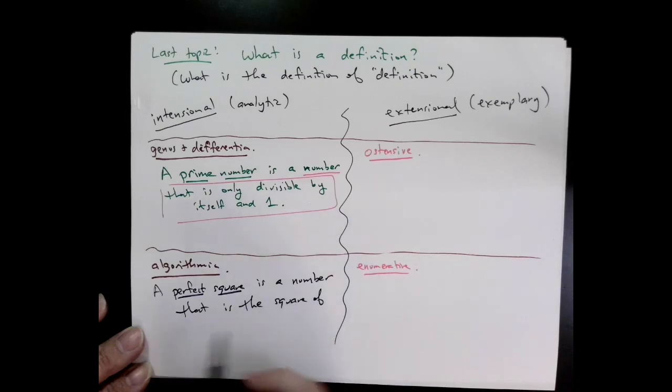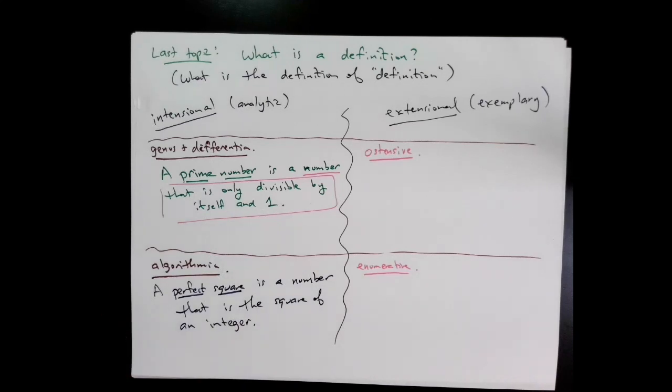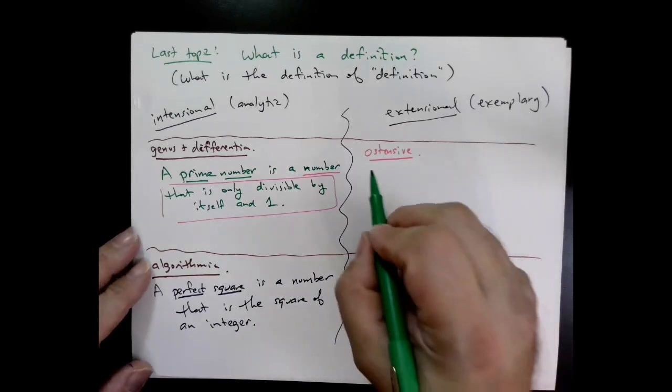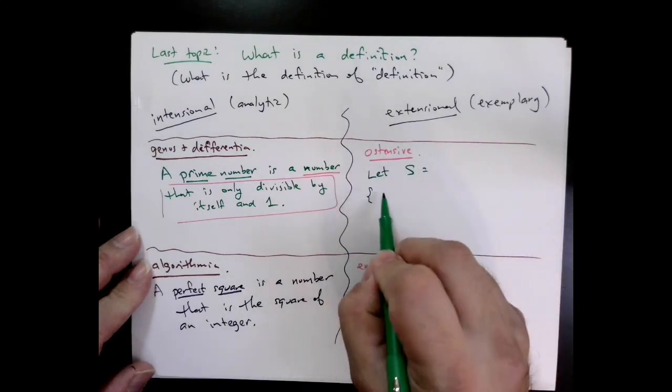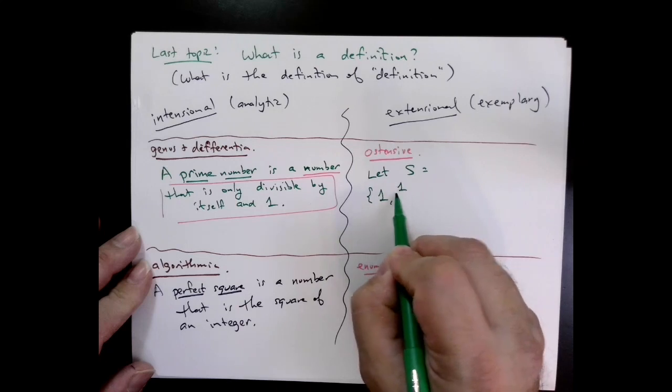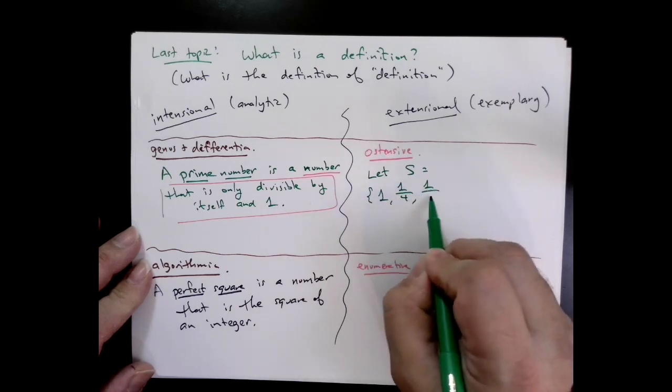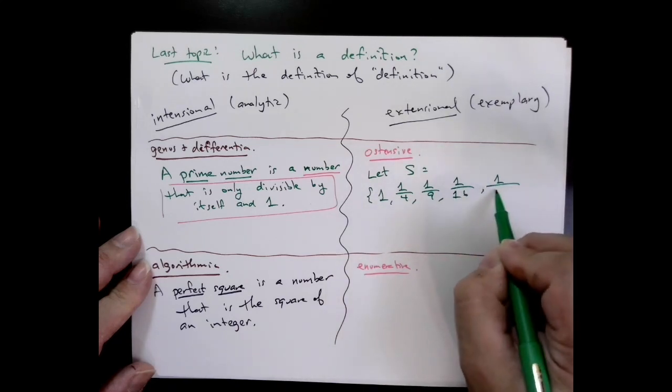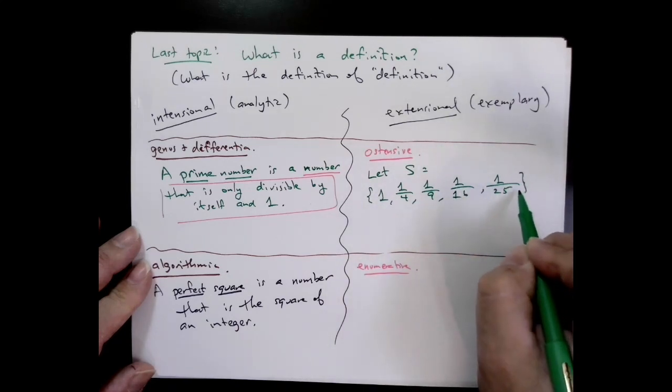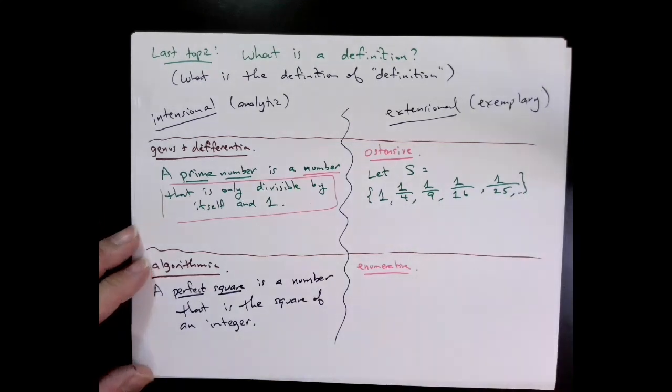An ostensive example is something we actually use in mathematics all the time. If you've ever seen the phrase roster notation for a set, that's the canonical example. For example, let's take a set where we take 1, 1/4, 1/9, 1/16, 1/25, and so forth. The 'and so forth' is doing a lot of work—I'm putting the onus on you. You have to see the pattern and figure out what I'm talking about. In this case, I think everybody can see what I've done is just taken 1 over the perfect squares, so it's clear where that pattern goes.